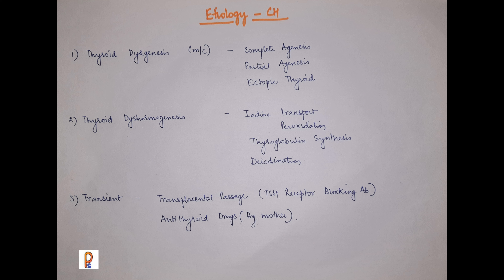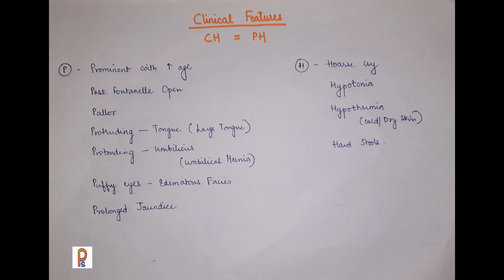Transient congenital hypothyroidism may occur following transplacental passage of TSH receptor blocking antibodies from mother to baby. Also, if the mother ingests antithyroid drugs like amiodarone, that can lead to congenital hypothyroidism in the child.